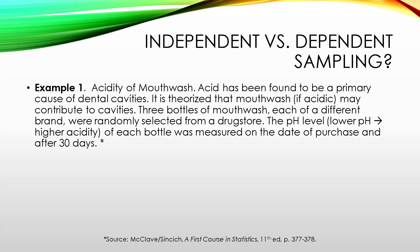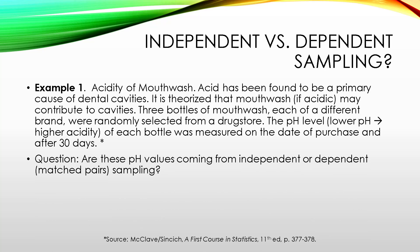Let's explore an example on the acidity of mouthwash. Acid has been found to be a primary cause of dental cavities, and it is theorized that acidic mouthwash may contribute to cavities. Three bottles of mouthwash, each of a different brand, were randomly selected from a drugstore. The pH level — a lower pH means higher acidity — of each bottle was measured on the date of purchase and also after 30 days. Since we're measuring each of those three bottles twice, looking at a before and after, it's dependent sampling — three matched pairs.